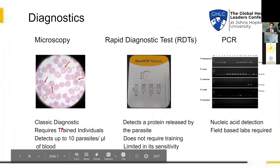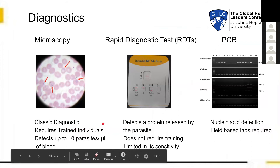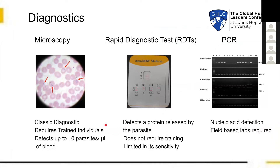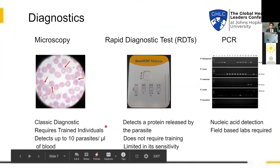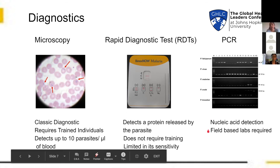To diagnose patients, we have three tests: microscopy, rapid diagnostic tests, and PCR. Microscopy is the classic diagnostic where we observe a blood slide under the microscope to see if the parasite is present. A rapid diagnostic test detects the protein released by the parasite — it's similar to a pregnancy test. PCR detects the nucleic acid presence, DNA or RNA of the parasite. However, PCR is not recommended for large campaigns; in such situations, RDTs are much more recommended.